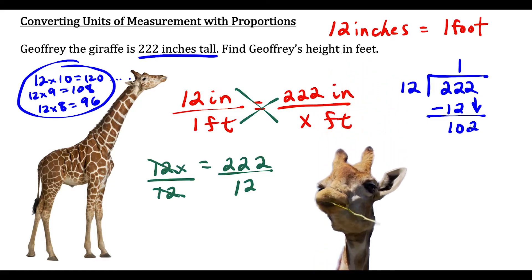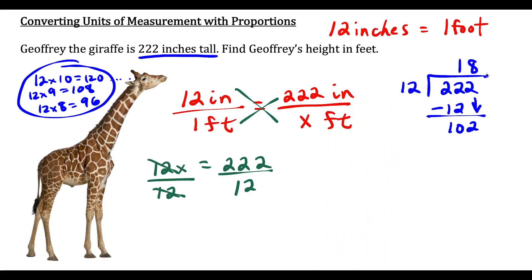So 12 goes into 102 eight times, and 8 times 12 is 96. So we subtract 96.